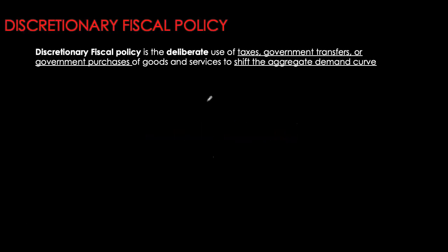Fiscal policy can be expansionary or contractionary. The first part of the chapter focuses on discretionary fiscal policy. When I say discretionary, it means deliberate changes in the use of taxes, transfers, or government purchases of goods and services. Any deliberate measures that change our taxes, transfers, or government purchases will shift our aggregate demand curve.